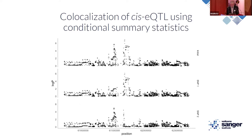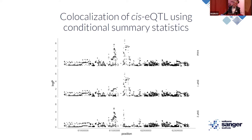Moving on to co-localization: we noted that we had multiple signals present in our cis-eQTL — 40% of our cis-eQTL had more than one signal. Here I'm showing an example in the two-megabase region near HIF-1 alpha. Using a forward regression approach, we identified two signals. We can condition on one signal to get the conditional summary statistics for the other and vice versa.